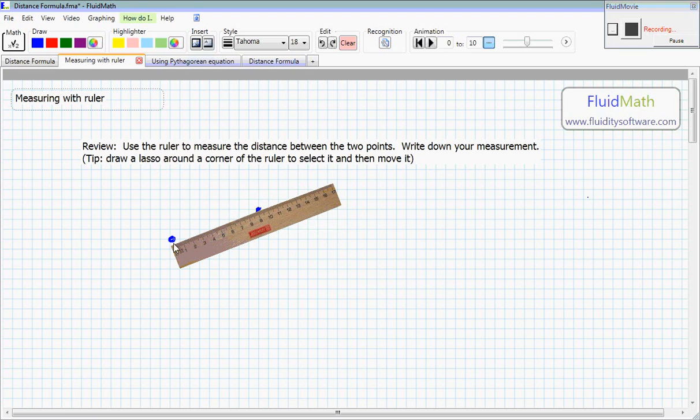So this is zero at the first point, and then we go one, two, three, four, five, six, seven, eight, nine, and a little over nine, somewhere between nine and nine and a half. So it says write down your measurement.